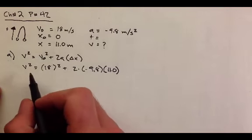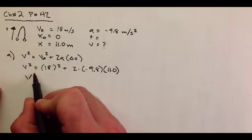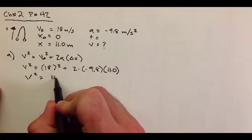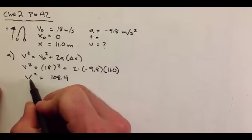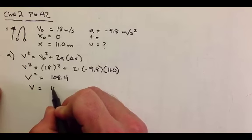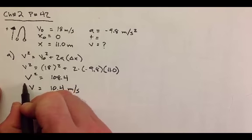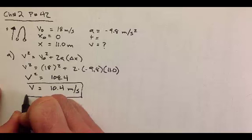And if I work this all out, I get that V squared is equal to 108.4. Therefore, V must be 10.4 meters per second. And I am done with part A there.